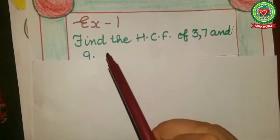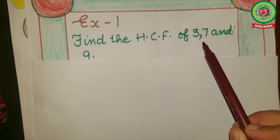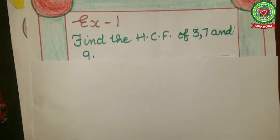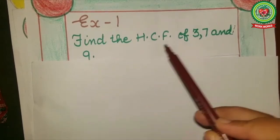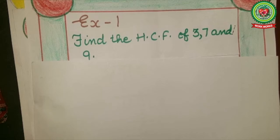Example number one: find the HCF of 3, 7, and 9. Now students, you can see I am having three numbers and I have to find the HCF of these three numbers. Before finding the HCF of three numbers, I will find the HCF of two numbers, and you already know how to find the HCF of two numbers.